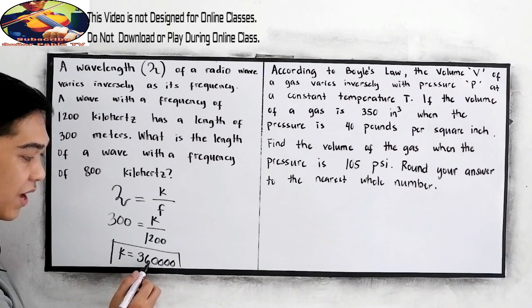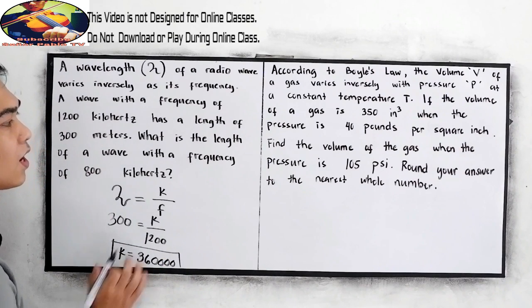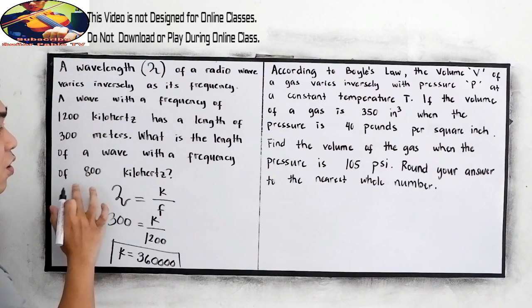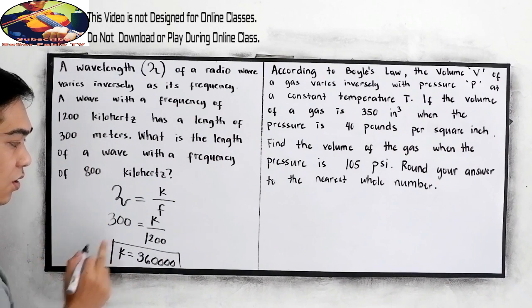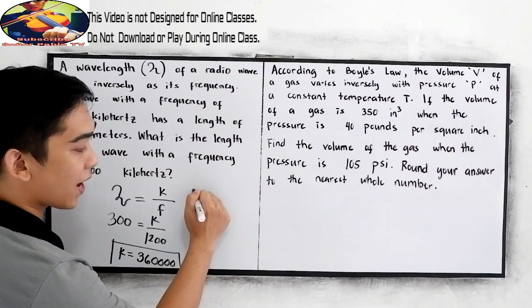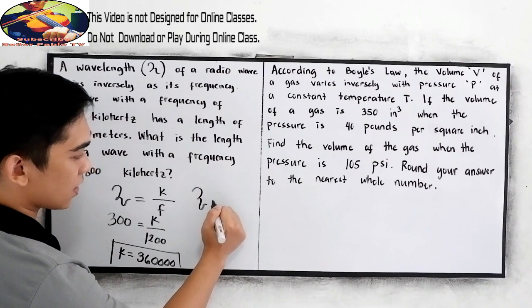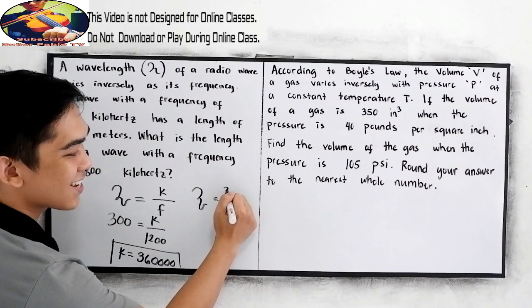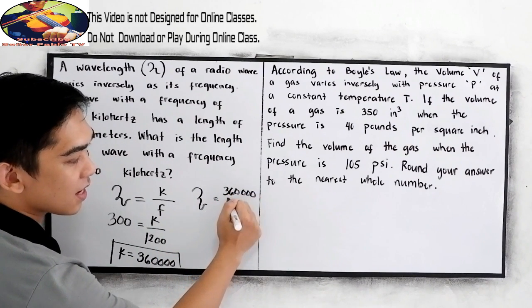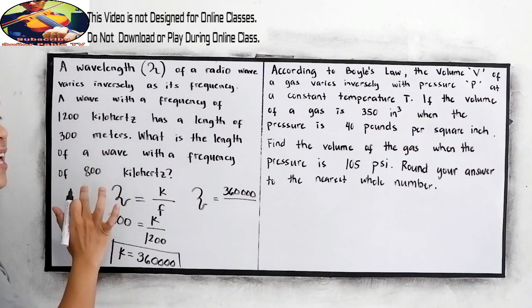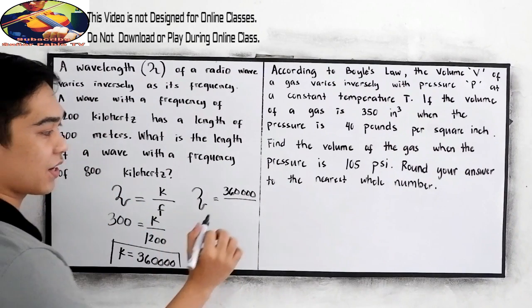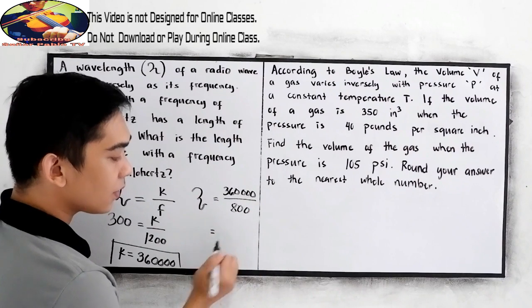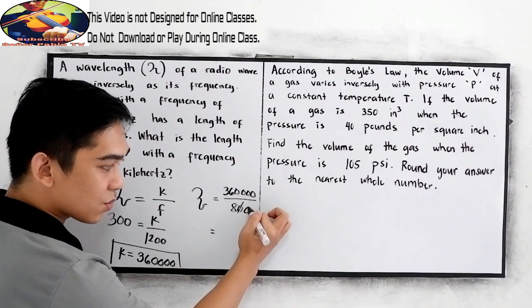So, our constant of variation is 360,000. What is the length of a wave with a frequency of 800 kHz? So, we're going to find the wavelength. Now, our constant is 360,000 divided by the given frequency is 800.